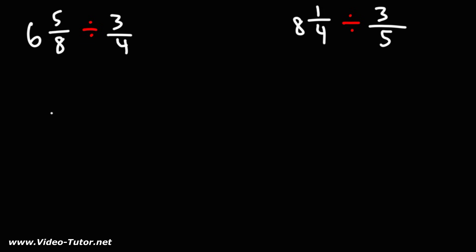Let's convert the mixed number to an improper fraction. We can do that by rewriting the denominator, 8, and then we're going to multiply the whole number by the denominator, and then add the numerator. 6 times 8 is 48, plus 5, that's 53. So we're dividing 53 over 8 by 3 over 4.